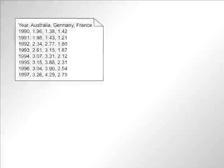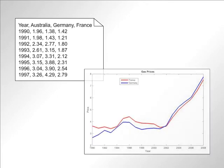This text file contains the price of gasoline in different countries between the years 1990 and 2008. To better understand the data, you may want to plot each country's price over time.